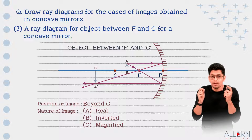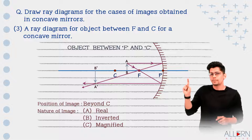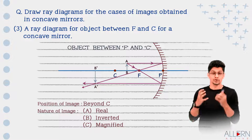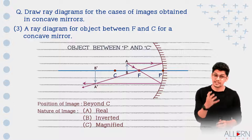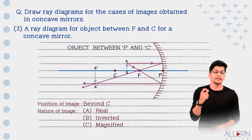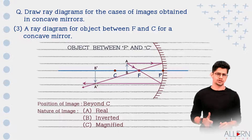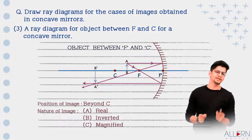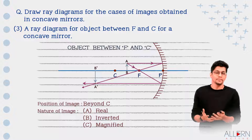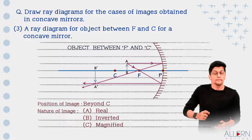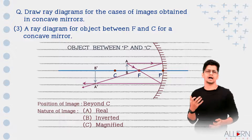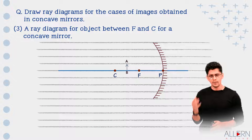When the object is placed between F and C, the image is formed beyond C. In your examination, if the question says draw a ray diagram to obtain a magnified image that is real and inverted, or to obtain an image beyond C, draw this diagram.